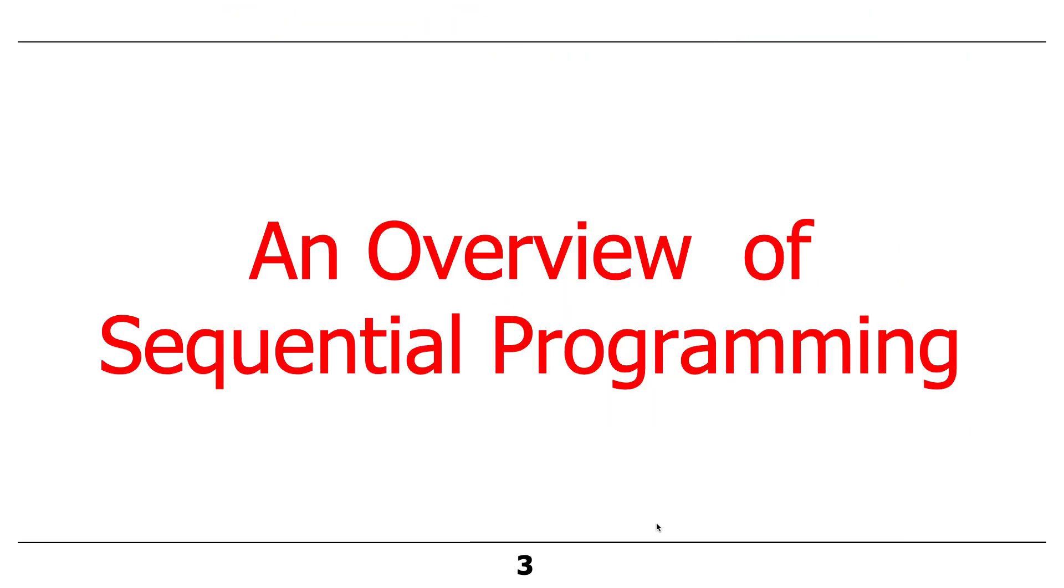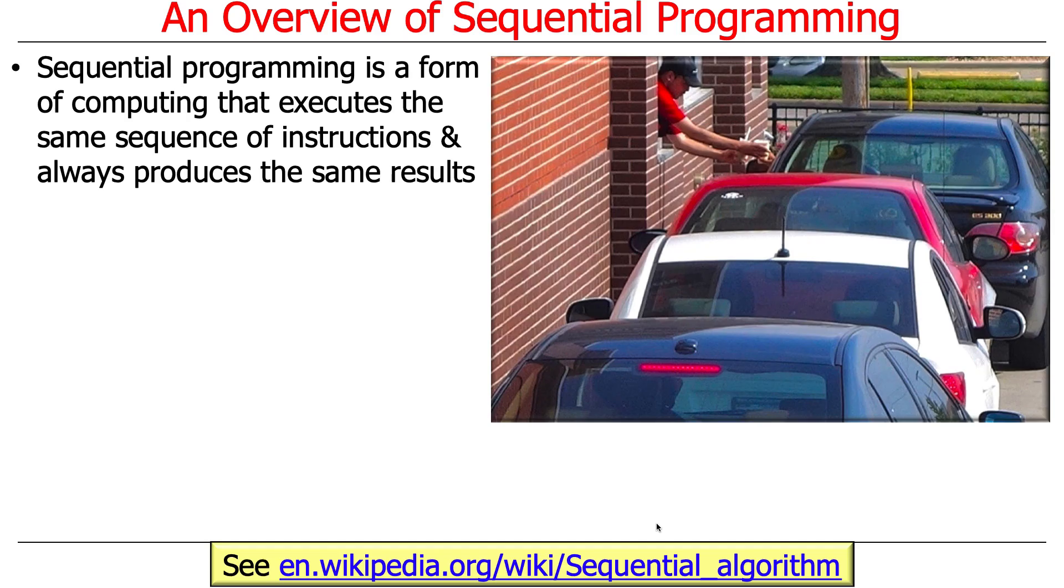Before we can talk about concurrent programming, let's talk about sequential programming, which is what you've been doing most of your time, most likely. Sequential programming is a form of computing that executes the same sequence of instructions and always produces the same results.